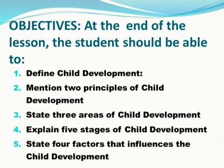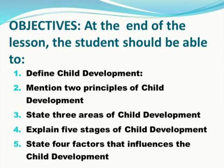At the end of the lesson, the student should be able to: 1. Define child development. 2. Mention two principles of child development. 3. State three areas of child development. 4. Explain five stages of child development. And 5. State four factors that influence child development.